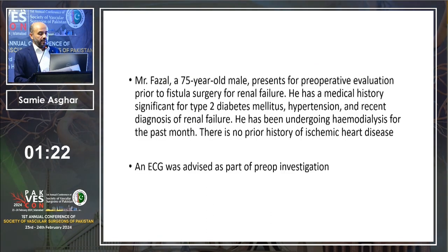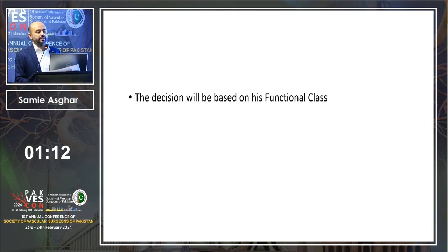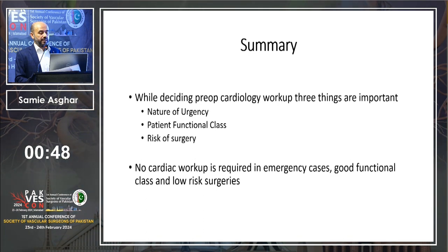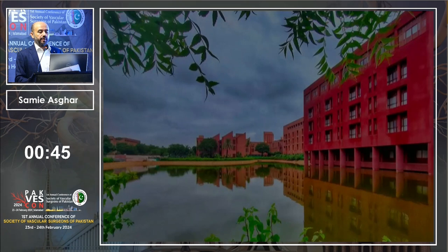Coming back to our scenario — what should be done in this case, and what information is missing? Functional class. We should inquire about the functional class of this patient, which will determine whether to proceed or do further testing. In summary, while deciding pre-op cardiology workup, three things are important: nature of urgency, patient's functional class, and risk of surgery. No cardiac workup is required in emergency cases when the patient has good functional class and the surgery is low risk.